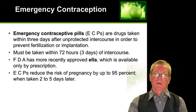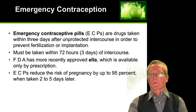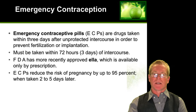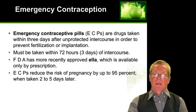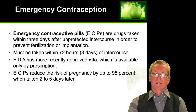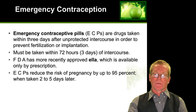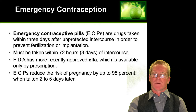Emergency contraceptive pills should be taken within 72 hours, or three days, of unprotected sex. The FDA has approved Plan B, which is available by prescription, though in California this can be available at your pharmacist.